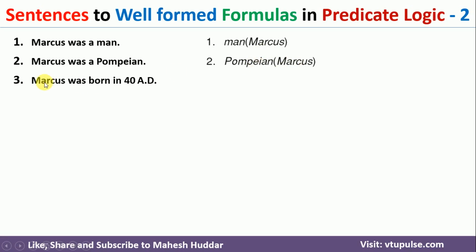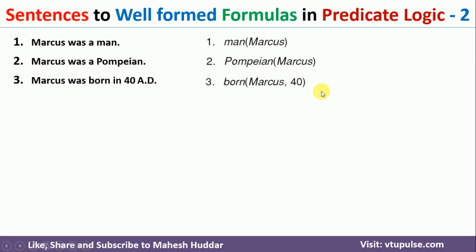The third fact is: Marcus was born in 48 AD. There are some different elements here. 'Born' is the event. Who was born? Marcus. At what time? At 48 AD. So we can write this as Born(Marcus, 48). That is how we represent this particular statement.